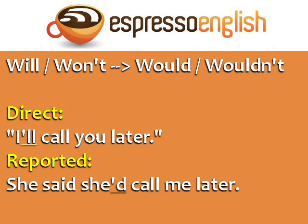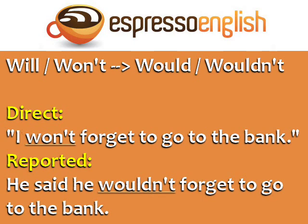Statements with will and won't become would and wouldn't in reported speech. Direct: 'I'll call you later.' Reported: 'She said she'd call me later.' Direct: 'I won't forget to go to the bank.' Reported: 'He said he wouldn't forget to go to the bank.'